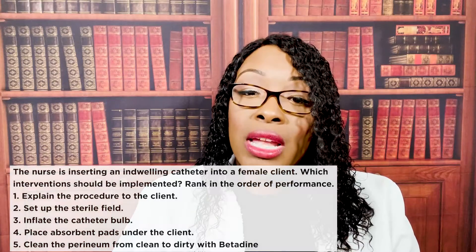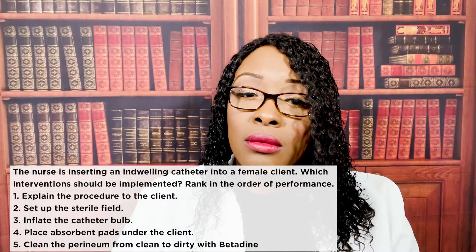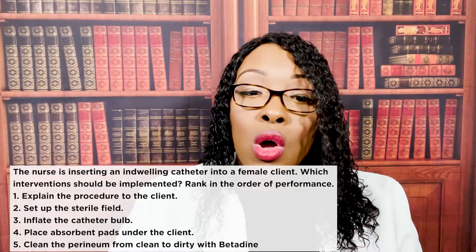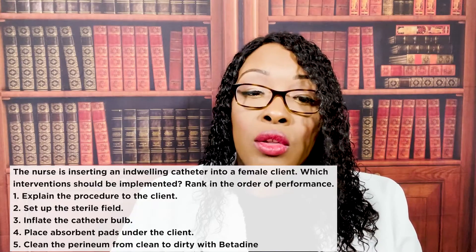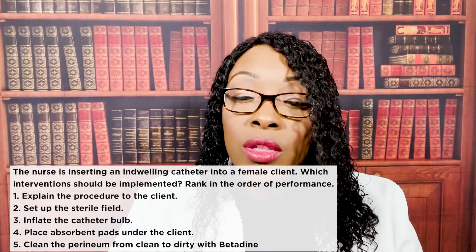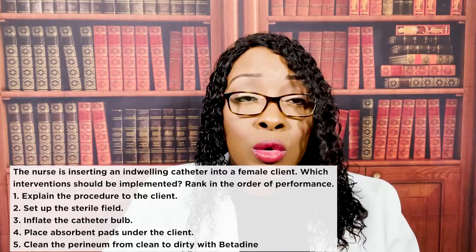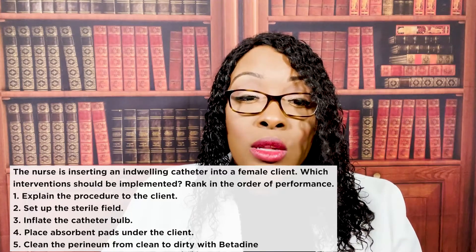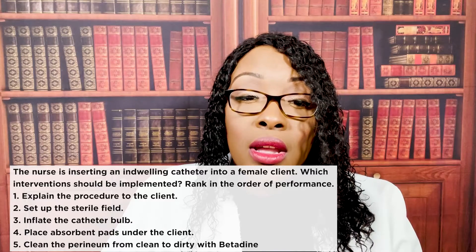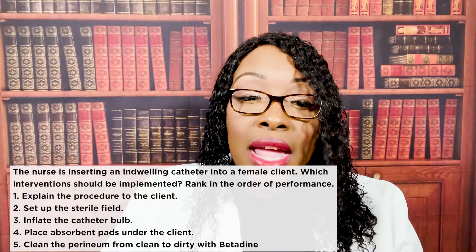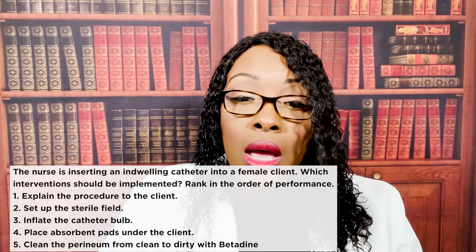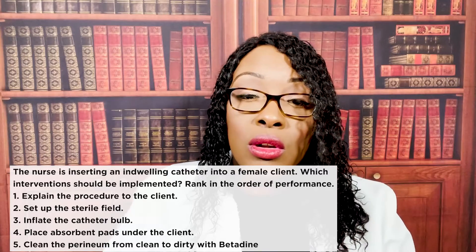The nurse is inserting an indwelling catheter into a female client — rank interventions in order: one, explain the procedure; two, set up sterile field; three, inflate the catheter bulb; four, place absorbent pads under the client; five, clean the perineum from clean to dirty with betadine. Correct order: first, explain the procedure to the client; second, place absorbent pads under the client; third, set up the sterile field; fourth, inflate the catheter bulb; fifth, clean the perineum with betadine.